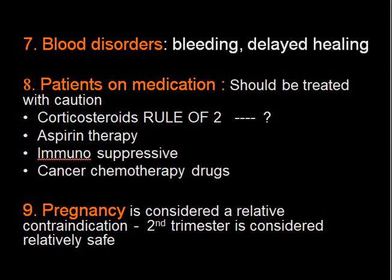Patients on medications should be treated with caution. If a patient has a history of corticosteroid therapy, there is an important rule called the Rule of Two. If a patient has undergone steroid therapy within the last two years for more than two weeks and at more than 20 mg of corticosteroid, they are a potential candidate for adrenal crisis due to adrenal atrophy during extraction. For such patients, either double the dose of steroid if already taking it, or give 20 mg of hydrocortisone on the day of surgery.